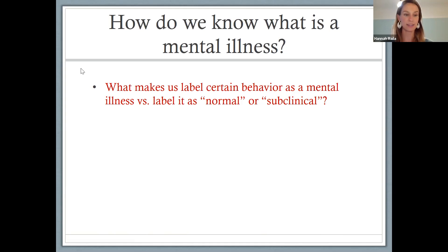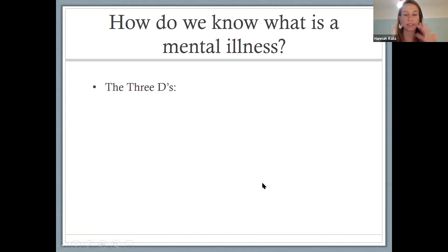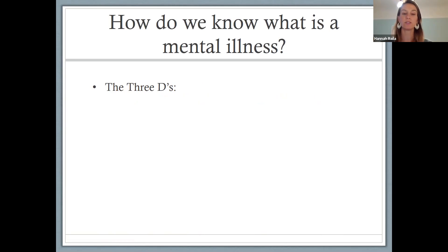Responses coming in: chemical imbalance, inconsiderate behavior, lack of self-control, maladaptive behavior. You guys captured a few of these in your answers, and we sort of summarize what makes us label something as a mental illness into what's often referred to as the three Ds.